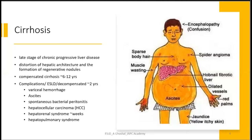Decompensation complications include variceal hemorrhage, ascites, spontaneous bacterial peritonitis, hepatocellular carcinoma, and hepatorenal syndrome. Once hepatorenal syndrome sets in, the prognosis can be in terms of weeks to months. There is also hepatopulmonary syndrome. Clinically you can observe features like spider angioma, muscle wasting, spurs bodies, and jaundice in patients with cirrhosis.